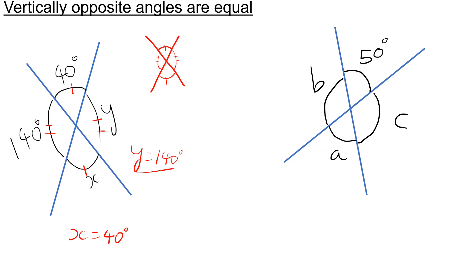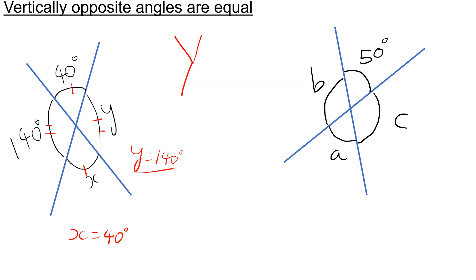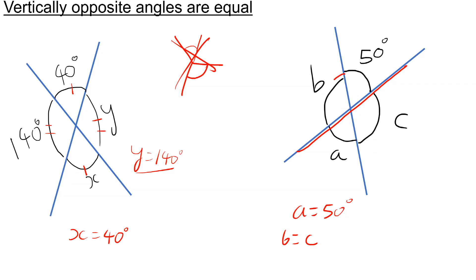Remember, this only works if you have two straight lines that cross. If you have a straight line with a bend, you can't use this property. Looking at the second question, A needs to be 50 degrees. B and C are equal to each other. To get B, we notice there's a straight line, so we do 180 take away 50, which is 130. And C is opposite to that, so C is also 130 degrees.